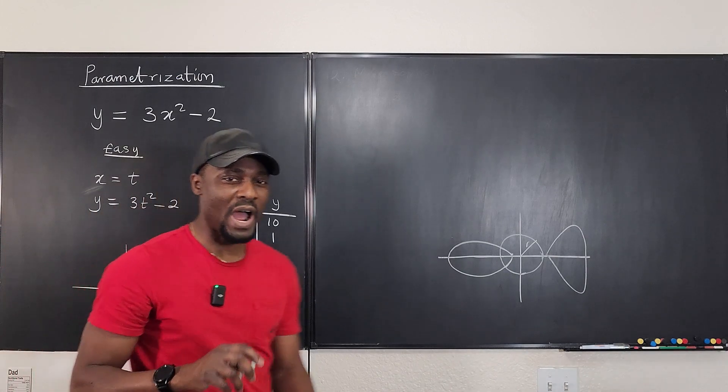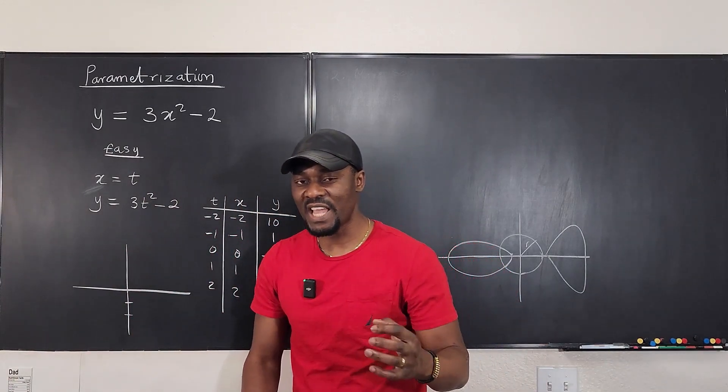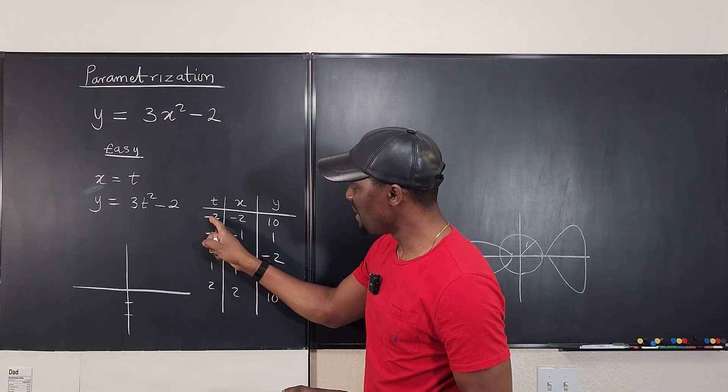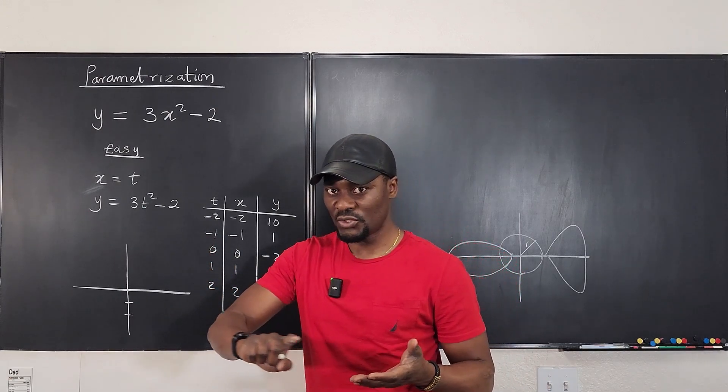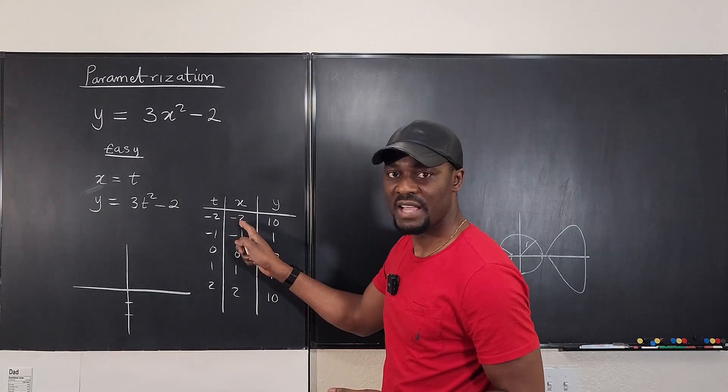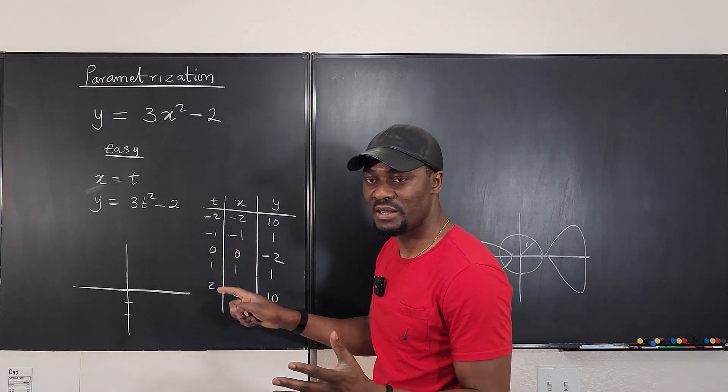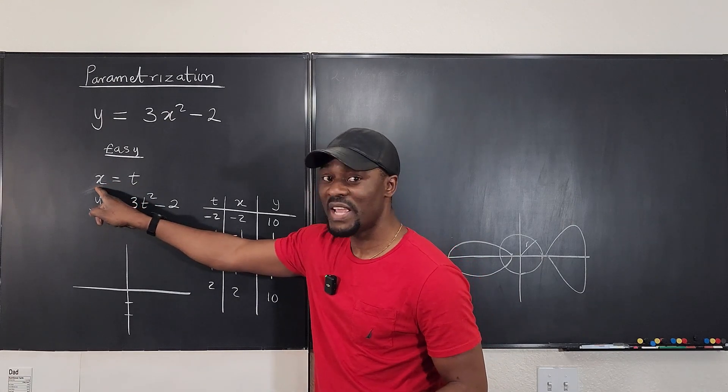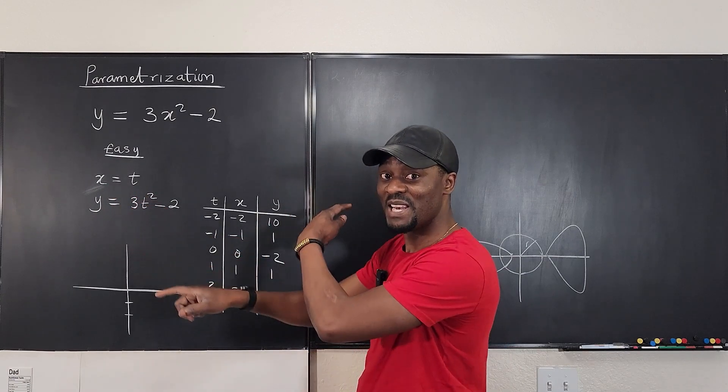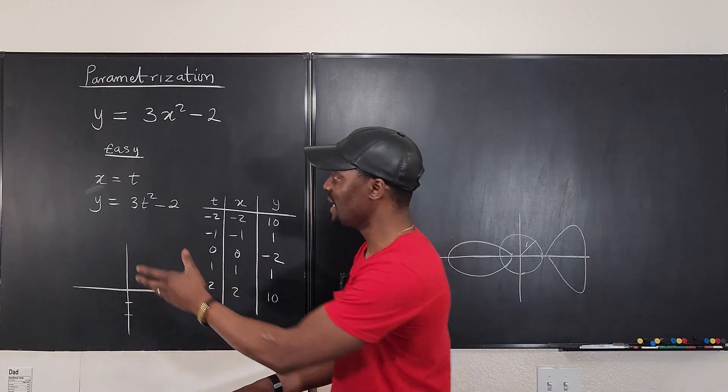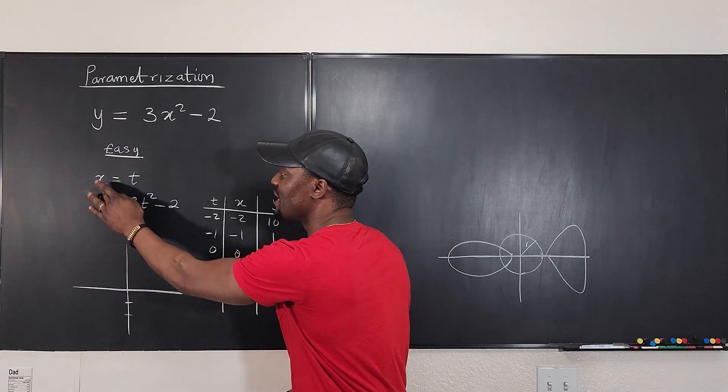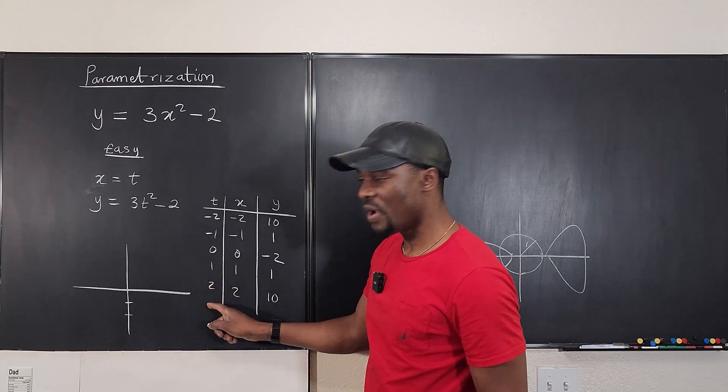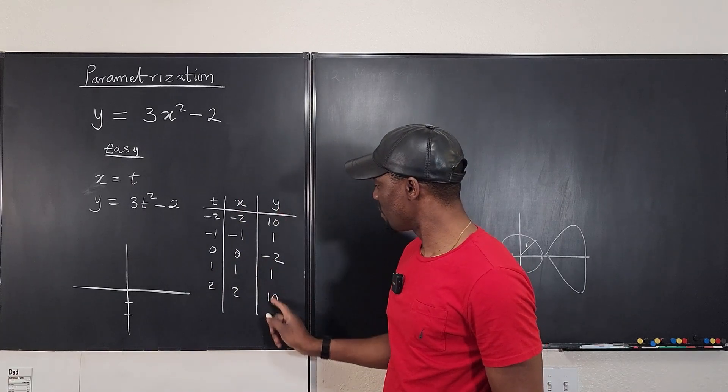But the point I want to make why I made this table is when you sketch a parametric curve, you have to always state the direction. So note that this is going from negative 2 to 2. It's going to the right. What's happening to the values of x? The values of x are going from negative to positive because dx dt is positive, which means x is going in the same direction as t.